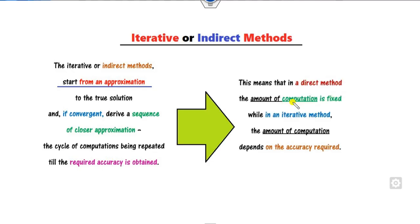When using the direct method, the amount of computation is fixed. In the iterative method, it depends on the amount of accuracy that we desire.